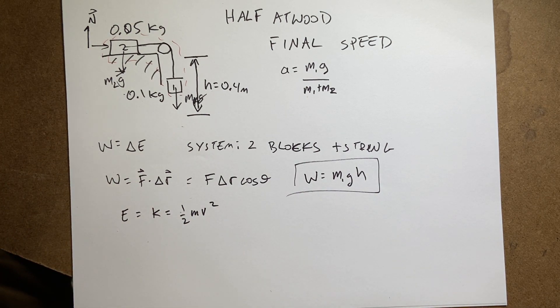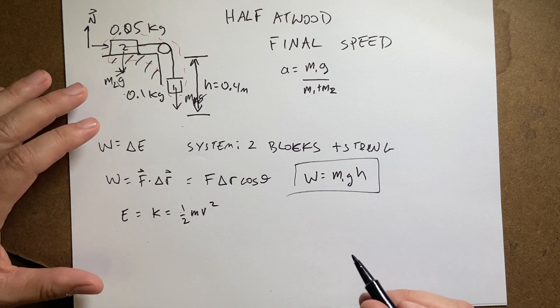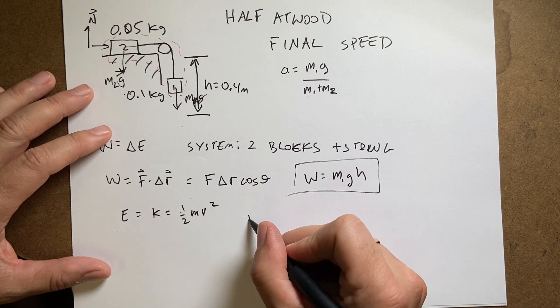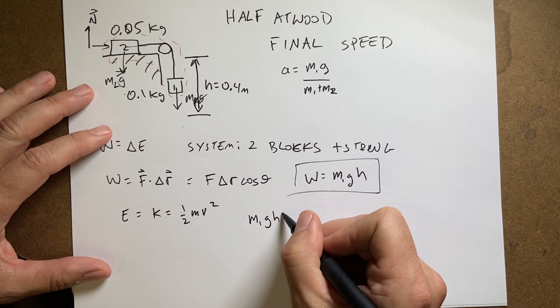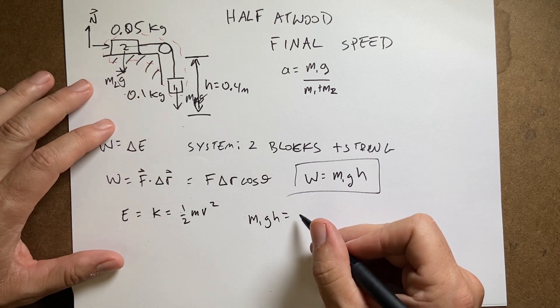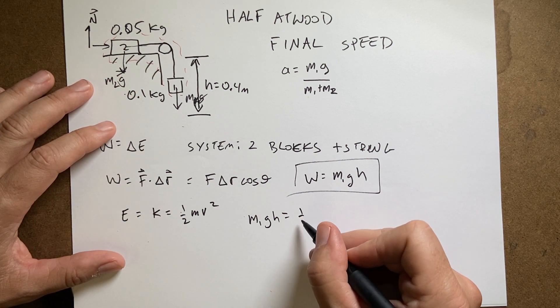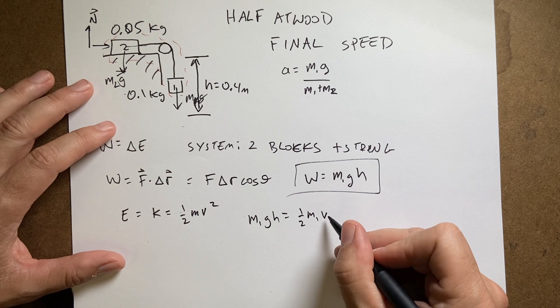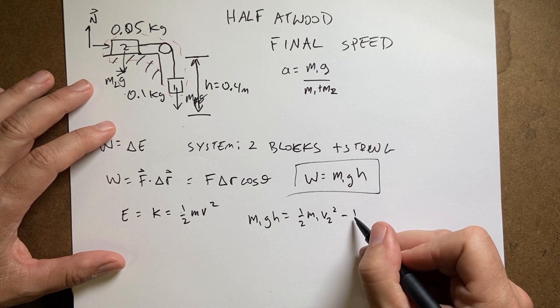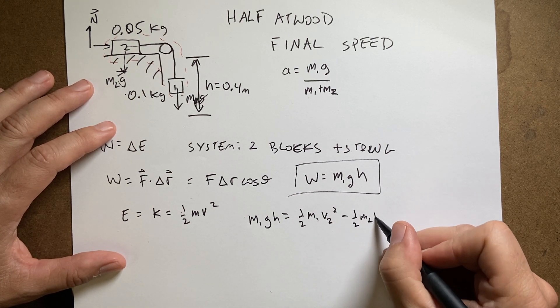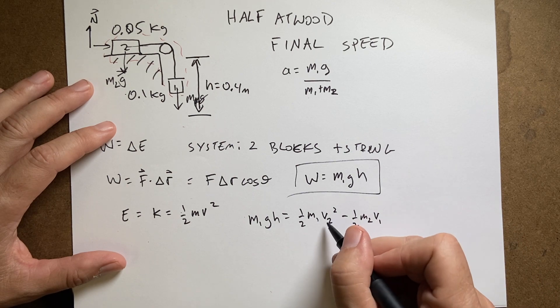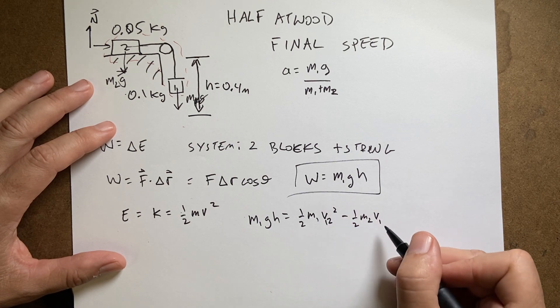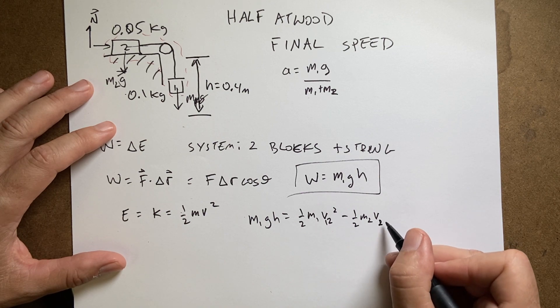But there's two masses, so both masses can move. So I can write this: the work done is m1gh, and that's the final kinetic energy, which is going to be one-half m1 v2 squared plus one-half m2 v1, 2, 1, 2.